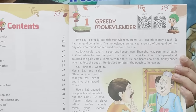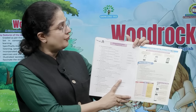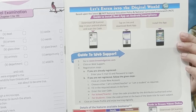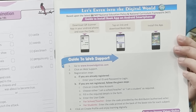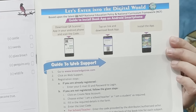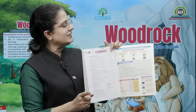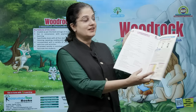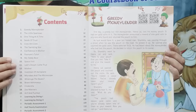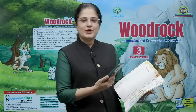To access these codes, first download the QR scanner app on your Android phone and scan the codes. Then tap on the link to download the book app and finally install the app.